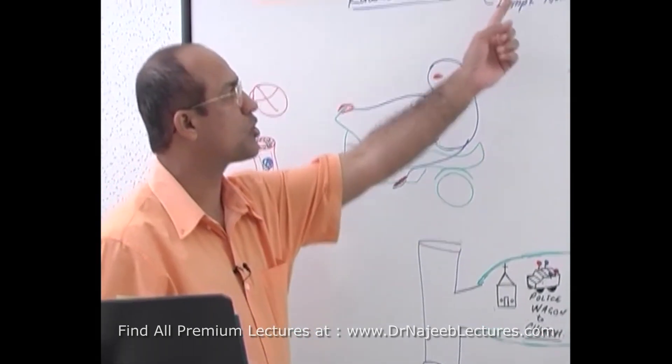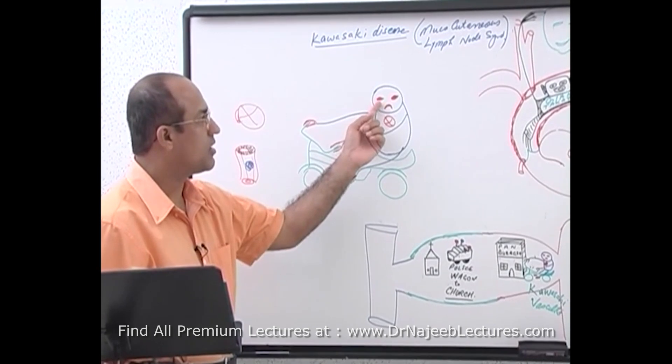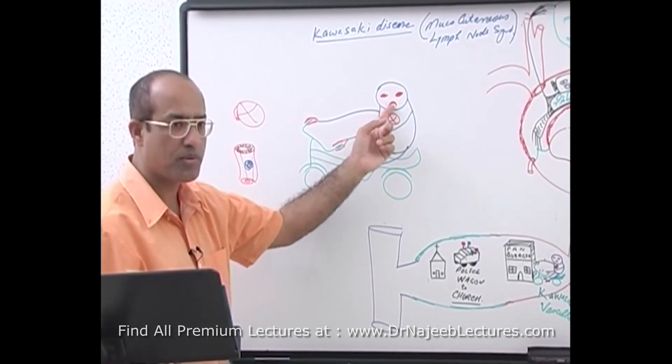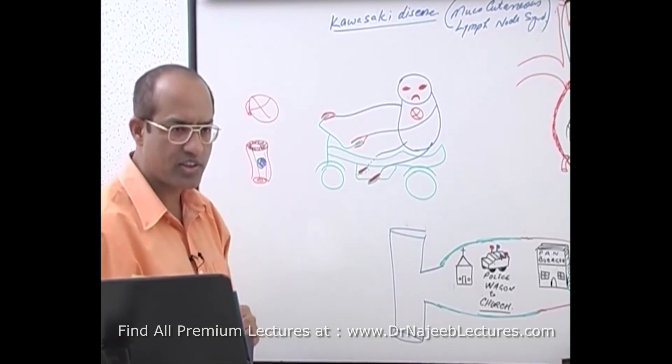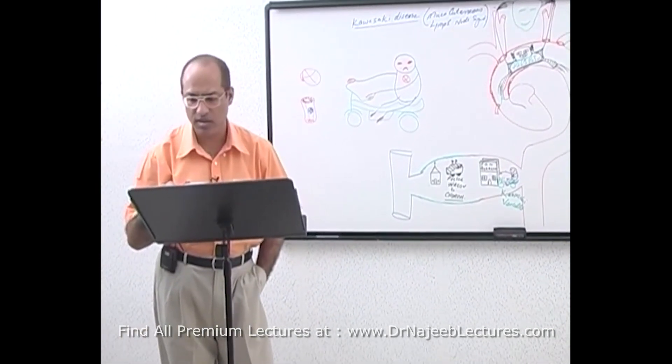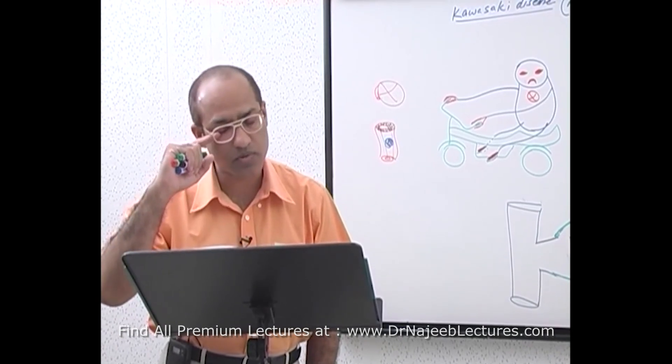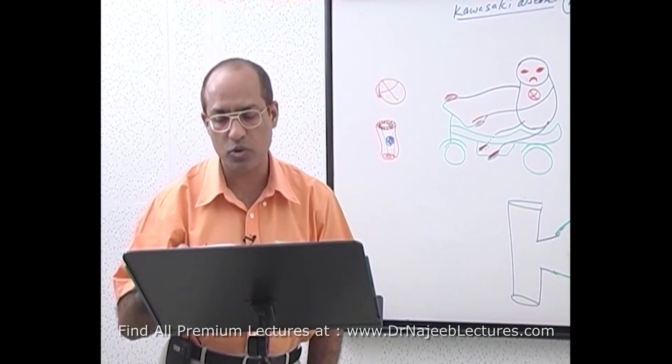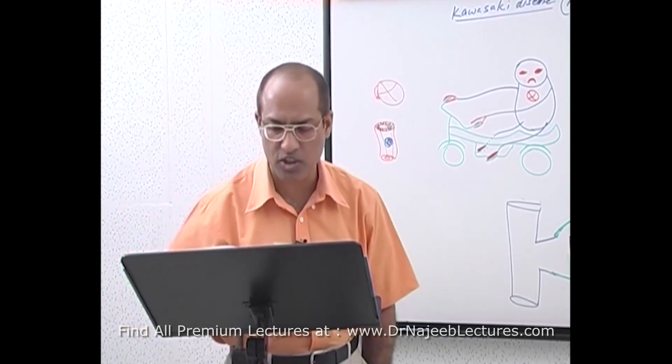Now in Kawasaki disease this vasculitis is associated with mucocutaneous lymph node syndrome. What really happens is that almost all of these babies develop mucocutaneous complications. For example, they develop fever along with conjunctivitis and red eyes. Oral mucosa may become red, their palms and soles may become red and palms and soles may be edematous. Skin may have red rashes. So these babies develop a medium sized arterial inflammation, but you have to remember most important inflammation occurs in coronary artery.